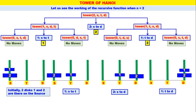I think this is quite simple. Whenever you are asked to draw the call tree, you should be able to neatly draw the call tree for Tower of Hanoi — it gives you an idea of how recursion happens. You can try Tower of 3 from Source to Destination; it will be a big call tree. You need to remember the three steps — after that everything becomes very easy. It is a simple recursive function. Thank you.